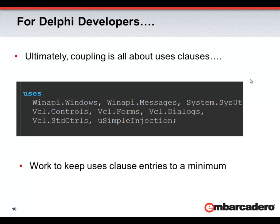For Delphi developers, coupling is all about uses clauses. If you don't put a unit name in your uses clause, you can't couple to that code. So as Delphi developers, we want to work really hard to keep our uses clauses very short, keep the number of entries very few. In addition, you can only couple to code in the interface section of a unit. So as we'll see in our demonstrations, we will work to reduce or even eliminate code in the interface sections of units. If a unit doesn't have any code declarations in its interface section, you can't couple to it. By the end of the code demonstration, you'll understand what I'm talking about.